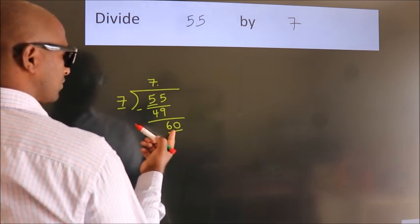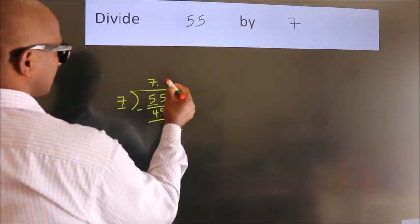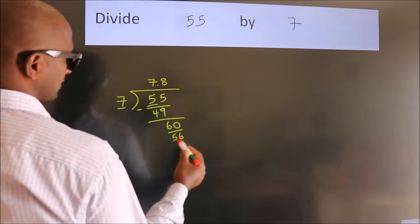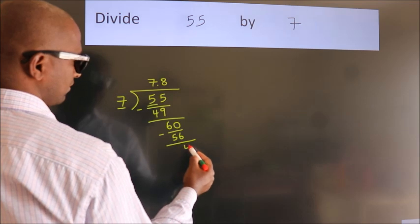A number close to 60 in the 7 table is 7 times 8 equals 56. Now, we subtract. We get 4.